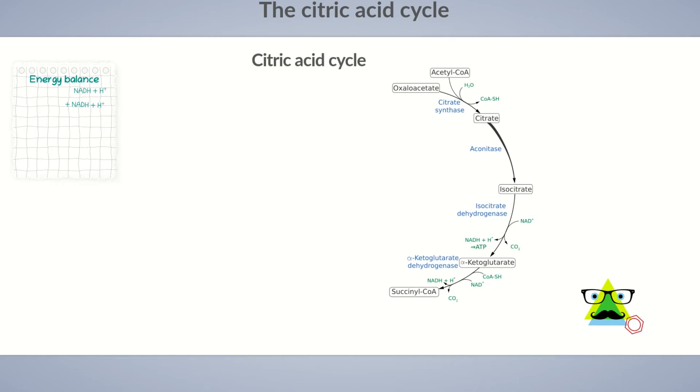With the formation of succinyl-CoA, the first task of the citric acid cycle is complete: cleavage of acetyl-CoA to carbon dioxide. The following four reaction steps aim to regenerate the carrier molecule oxaloacetate, enabling the citric acid cycle to repeat continuously.